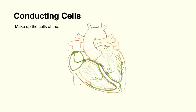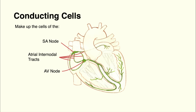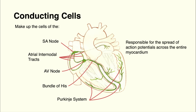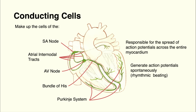Conducting cells make up the tissues of the SA node, the atrial internodal tracts, the AV node, the bundle of His, and the Purkinje system. These cells are specialized muscle cells which do not contribute significantly to the generation of force and injection of blood from the heart. Instead, these cells function to spread action potentials over the entire myocardium. Another feature is that they generate action potentials spontaneously — in other words, these cells are responsible for the rhythmic beating of the heart.